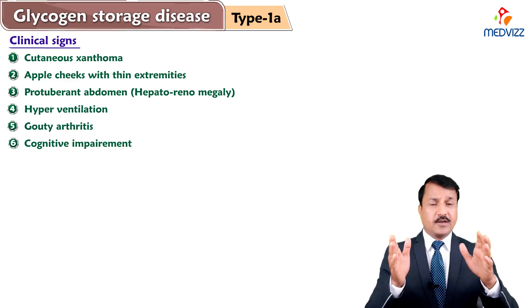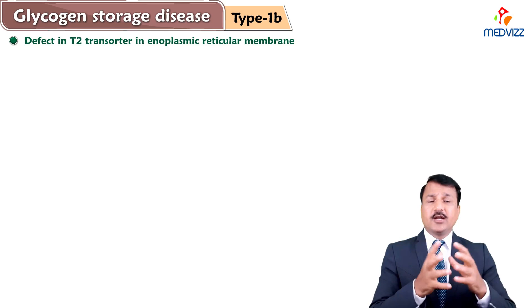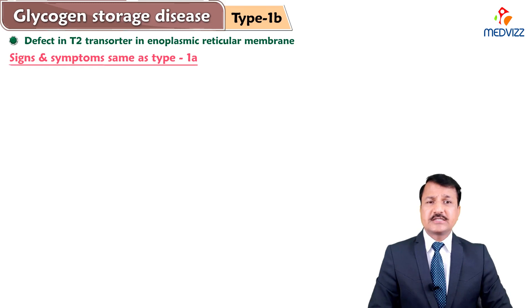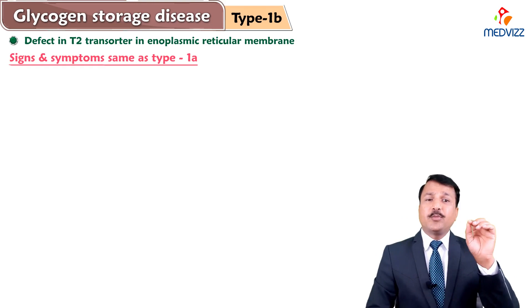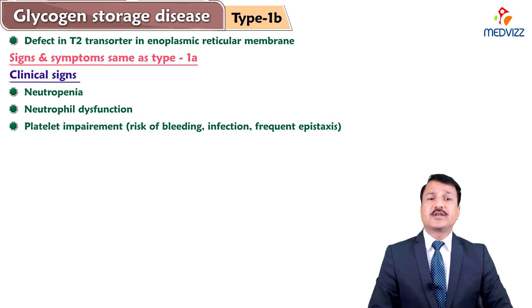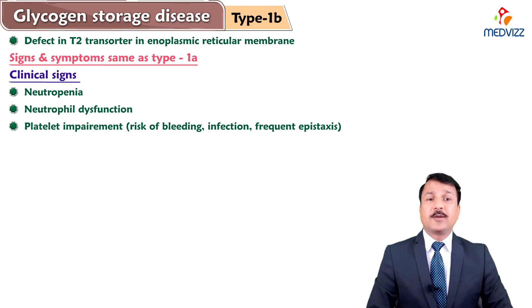Now, Glycogen Storage Disease Type 1B is due to a defect in T1-translocase in the endoplasmic reticulum membrane, so glucose-6-phosphate cannot enter the lumen of the ER. Signs and symptoms are very similar to Von Gierke Disease (GSD 1A). Additionally, Type 1B patients show neutropenia, neutrophil dysfunction, and platelet impairment, all giving rise to risk of bleeding and infection. Patients may show frequent epistaxis and other bleeding manifestations — these are the additional signs in Type 1B beyond the Type 1A signs.